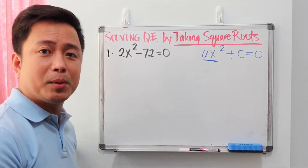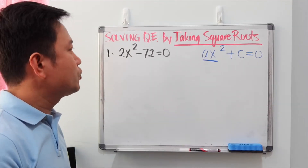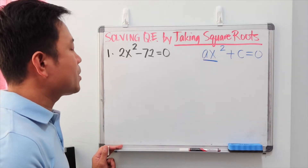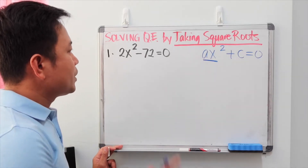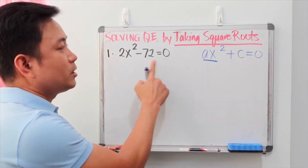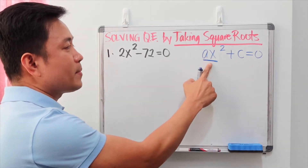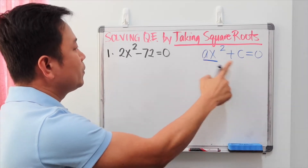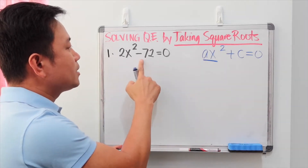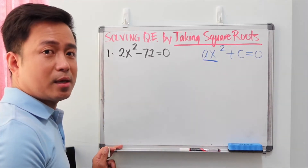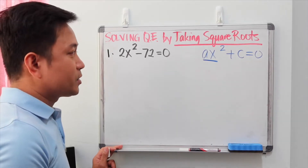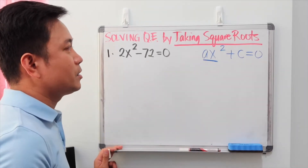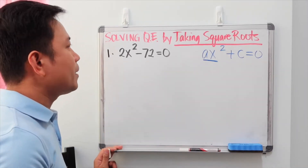For example 1, we have 2x squared minus 72 equals 0. This quadratic equation is in the format ax squared plus c equals 0 because the bx term is missing, so we can use the square root method.